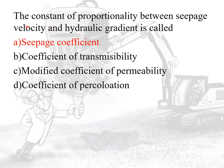The constant of proportionality between the seepage velocity and hydraulic gradient is called the seepage coefficient. The coefficient of percolation is the ratio between the permeability and the porosity. The coefficient of transmissibility means coefficient of permeability multiplied by the breadth.